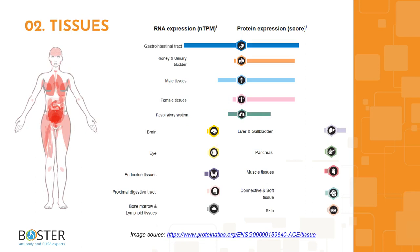Topic 2: Where is ACE? ACE is highly expressed in the gastrointestinal tract as well as the respiratory system and male and female tissues. You can find more information on proteinatlas.org to check out which cell lines express ACE and which ones don't. This information will come in handy when designing positive and negative controls for western blot and immunohistochemistry.